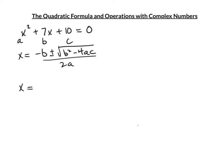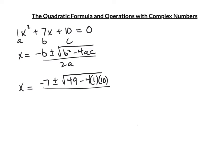So x = -7 ± √(b²). Be aware: if b were negative, squaring makes it positive. 7² = 49. Minus 4 times a (which is 1) times c (which is 10), all over 2a = 2×1. This gives -7 ± √(49 - 40) / 2, or -7 ± √9 / 2.